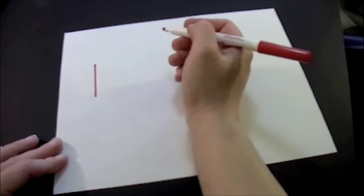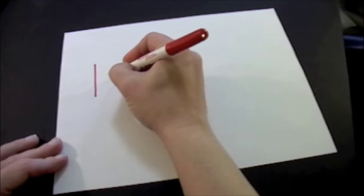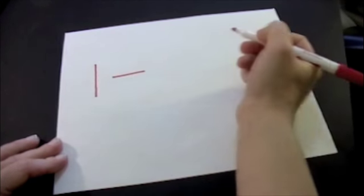The second stroke in developmental sequence is a horizontal line. Start at the left and go across to the right.